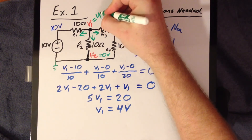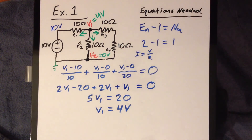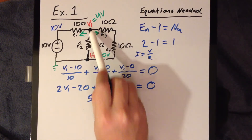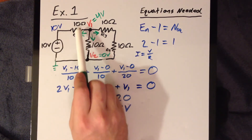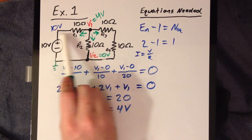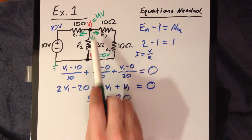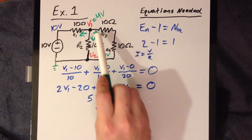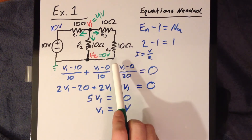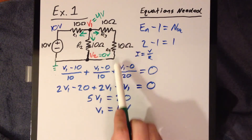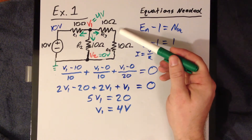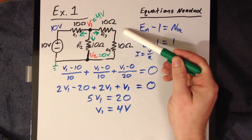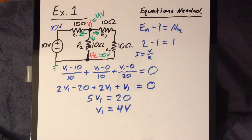So V1 is equal to 4 volts. With that knowledge, we now know the voltage difference across every node in the circuit. There are 6 volts across the first branch with 10 ohms, 4 volts across the next with 10 ohms, and 4 volts split across 20 ohms for the last branch — so we can calculate all the currents. If you need the intermediate voltage, you can use the voltage divider rule. That's our first example.